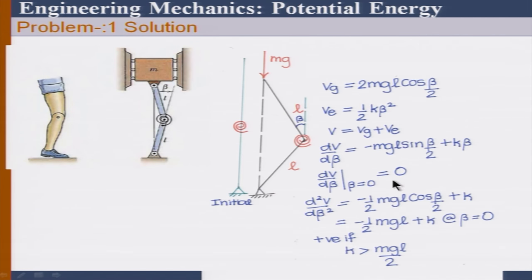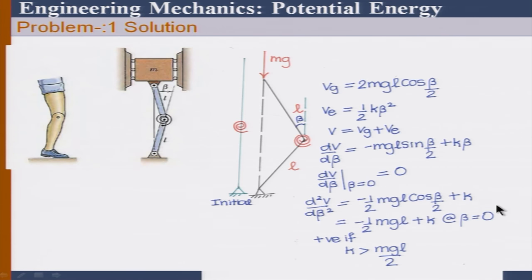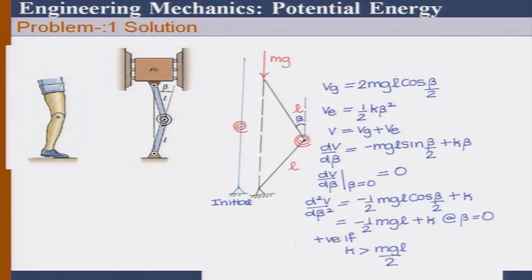Now the question is when will it be stable. For that, we evaluate d²V/dβ² — that should be greater than 0. At beta = 0, we substitute beta = 0, and that should be greater than 0. So we can say K should be greater than MgL over 2.